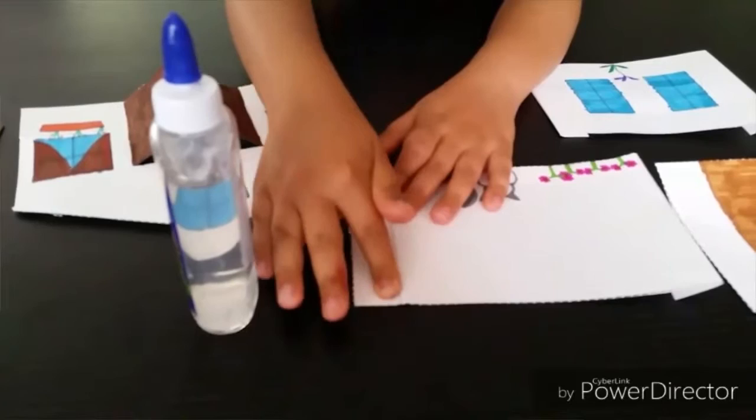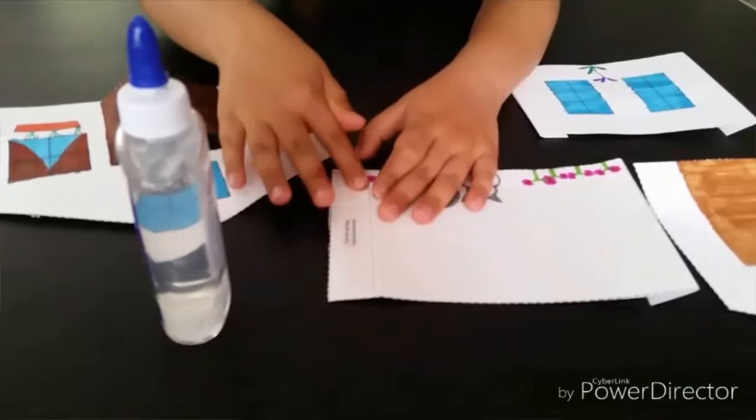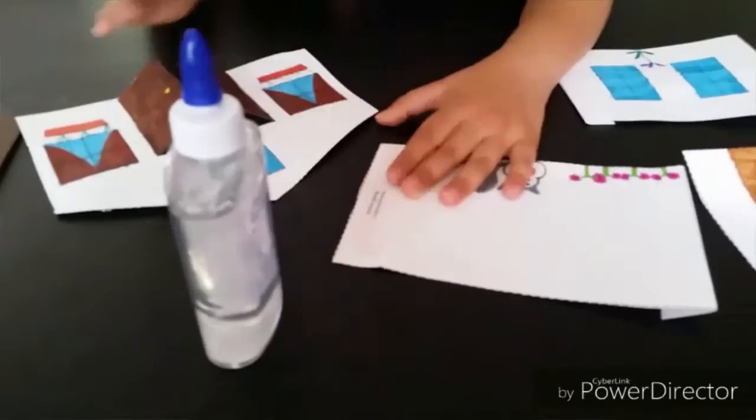Glue the side pieces to the back sides of the front and rear house pieces. Line up the bottom edges so the house stands evenly.